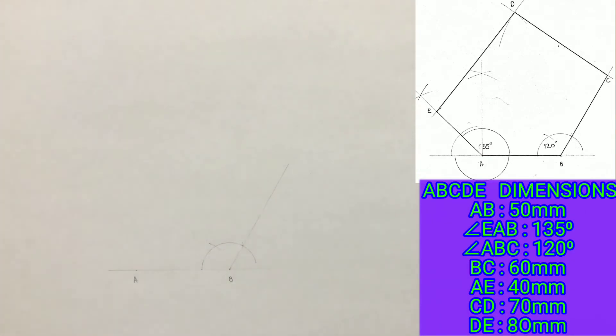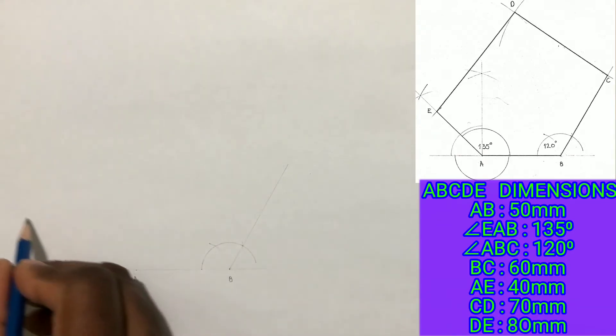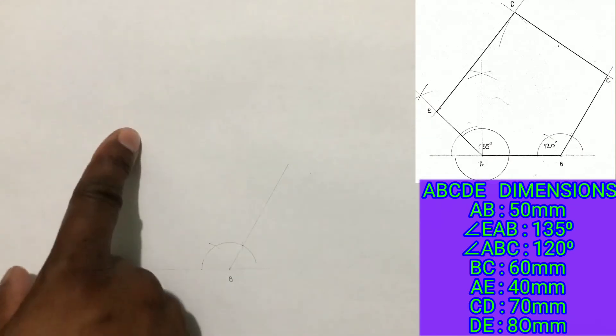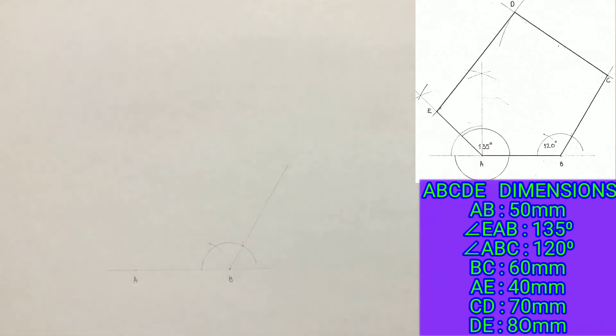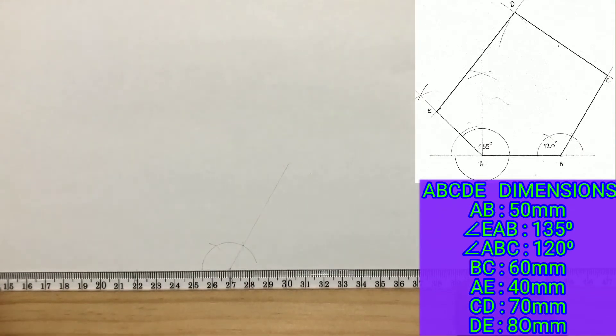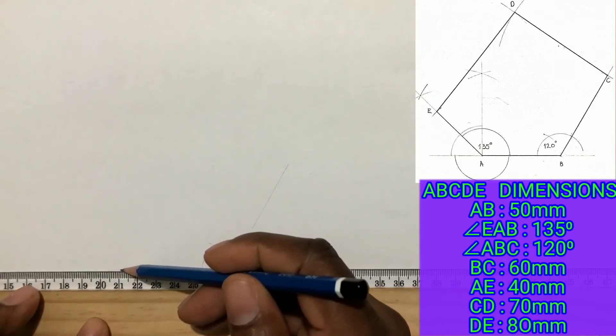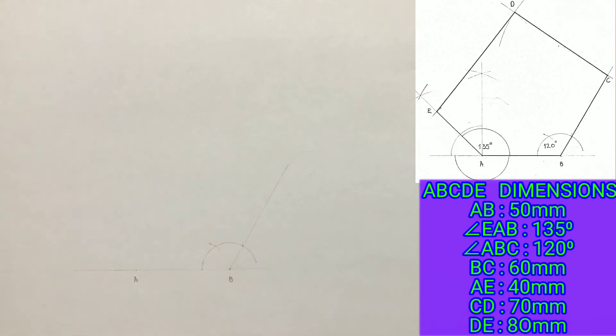You are also given that angle EAB measures 135 degrees. In order to construct this 135 degree angle, we need to first construct a 90 degree angle at point A. Then we bisect the 90 degree angle that is on the left. Now go ahead and construct your 135 degree angle at point A.